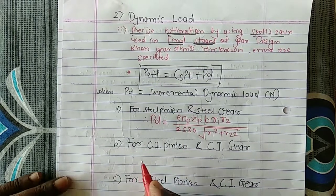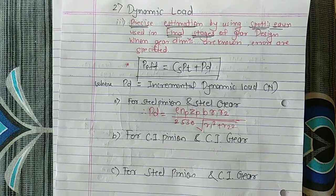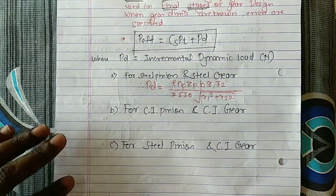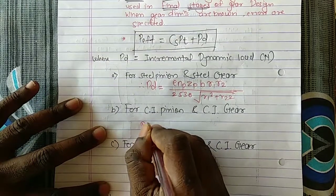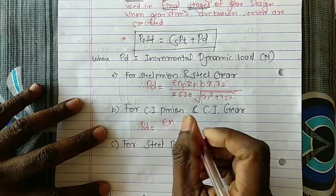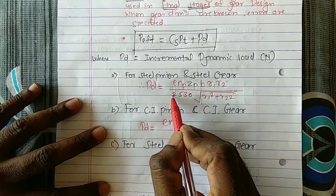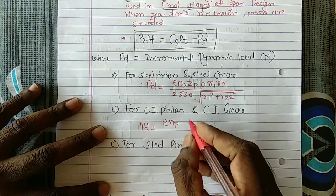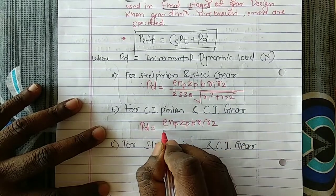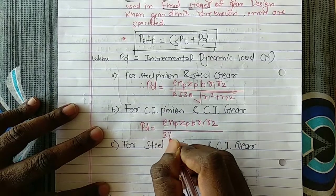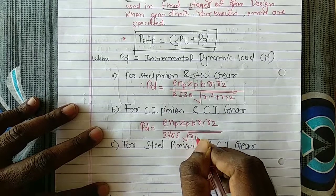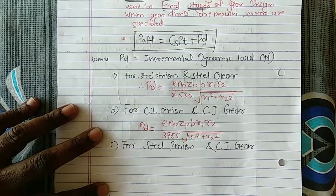If the pinion and gear are both made up of cast iron, then the incremental dynamic load P_D is given by the same form of equation, but only the denominator constant changes. In this case it becomes: E × N_P × Z_P × B × R1 × R2 divided by 3785, under a square root of R1² + R2².